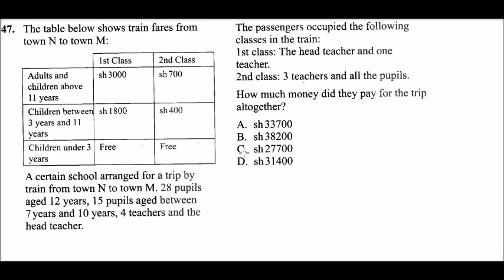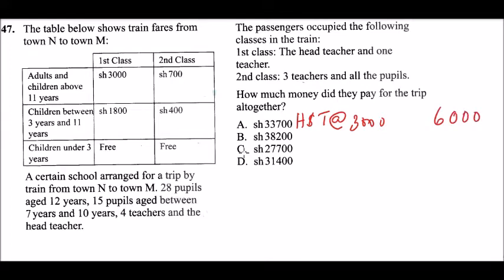We start with first class: the head teacher and one teacher — that's two passengers at 3,000 each, giving a total of 6,000. Then three teachers in second class, paying 700 each: 3 × 700 = 2,100. Adding these together gives a running total of 8,100.